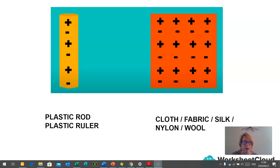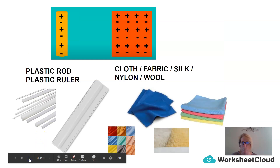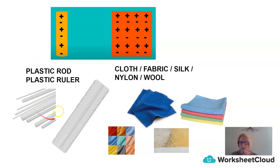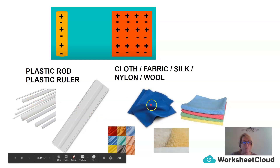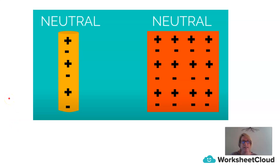We have a little experiment to do today. We're going to take a plastic rod and a ruler, and some cloth, fabric, silk, or nylon wool. Here are some examples of a plastic ruler or a plastic/perspex rod, and different types of cloth, fabric, silk, or wool. When we initially look at the objects, they are both neutral.